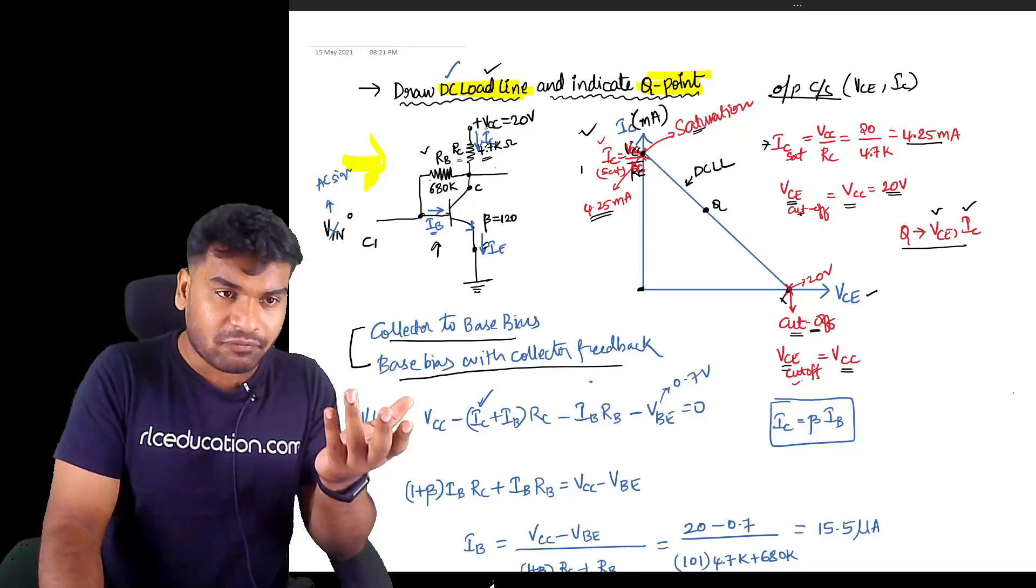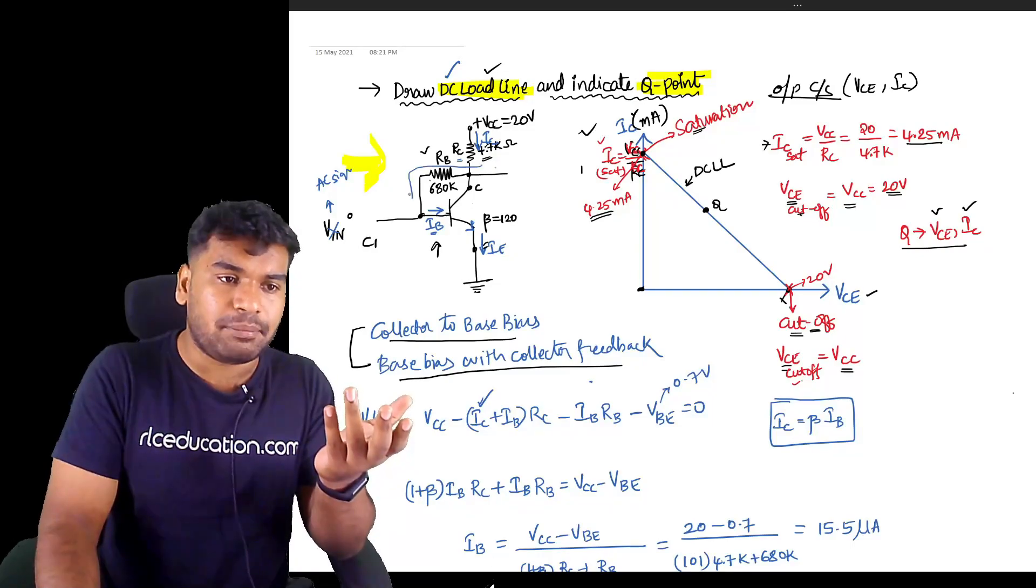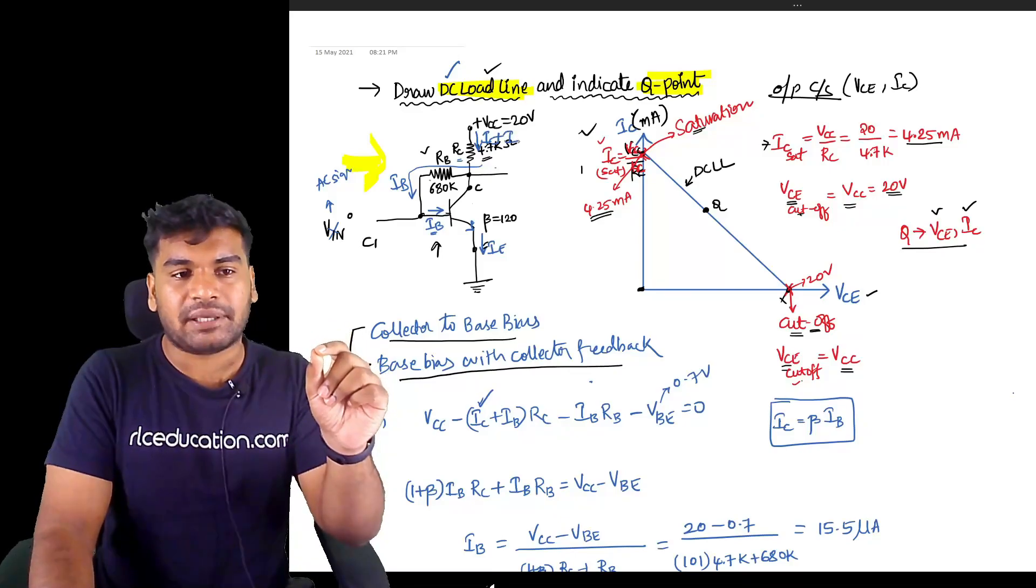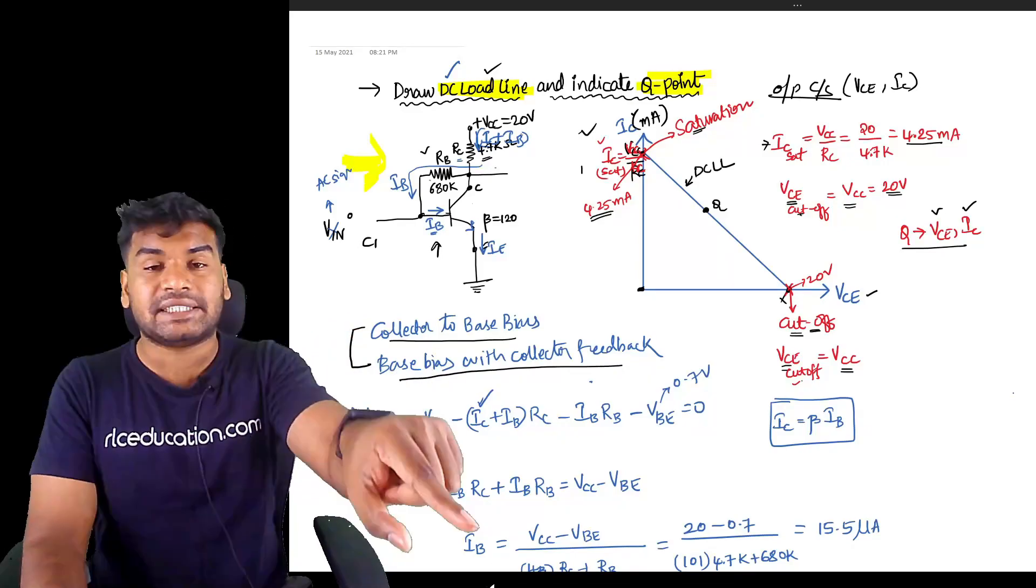Now this IB also must come from VCC only. The supply must provide the IB also. This is the IB. That means the supply is giving IC plus IB, so the current through RC is IC plus IB.